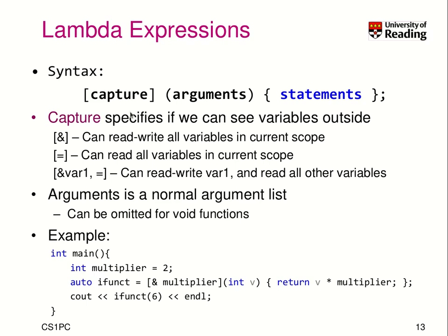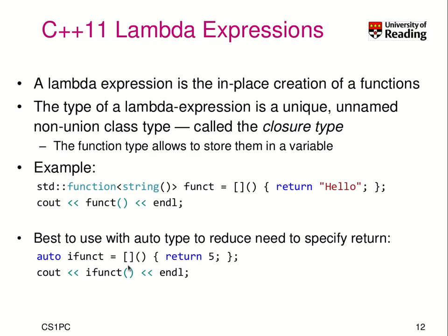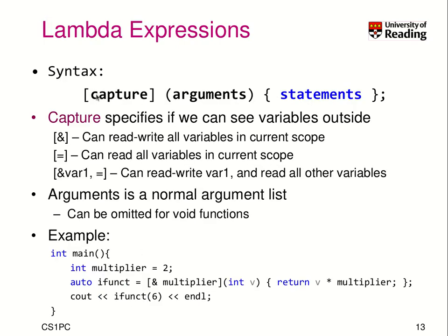You may wonder why there was this weird bracket notation over here. It's called a capture. What is the capture for? It allows you to see variables outside of the function body, which is really an interesting concept. In our main function, we declare a variable 'multiplier' and set it to 2. Now by using this capture with the ampersand, we allow read-write access to all variables in scope, and we give read-write access to the variable 'multiplier'.